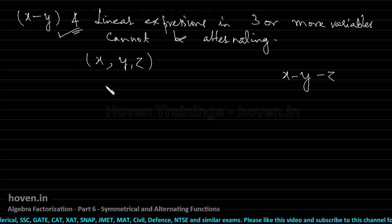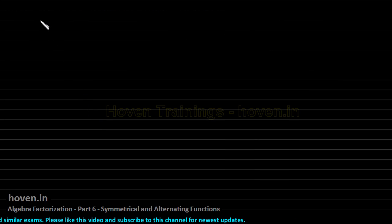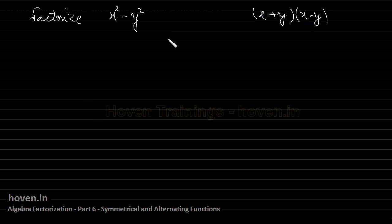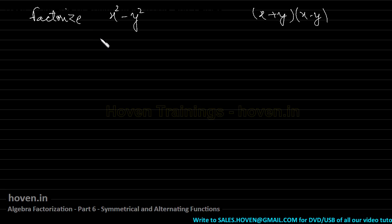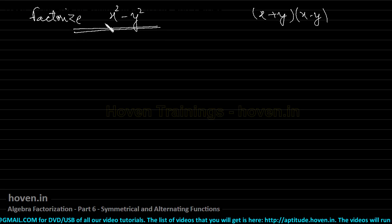Now let us apply our knowledge to do some factorization. Let us start with a simple expression: factorize x squared minus y squared. We know its answer is x plus y into x minus y. I have taken this simple example purposely so that I can illustrate the concept of factorization using symmetrical and alternating functions. This method is very useful if you get very complicated expressions, but first let me put forth the theory using this simple example.